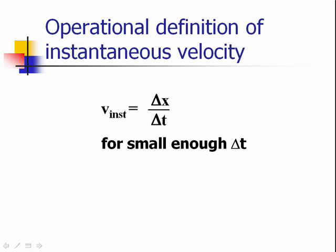How small is small enough? The delta t has to be small enough that this object, whatever we're describing, hasn't had enough time to speed up or slow down, so that the motion during that itty-bitty time interval appears to be uniform.